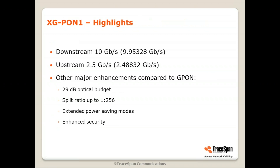Let's start with XG-PON 1. XG-PON 1 was the obvious main step after G-PON — based on similar principles. The downstream rate was 10G, or more accurately 9.95328G. The upstream was 2.5G, compared to 2.5G downstream and 1.25G upstream in G-PON. Other major enhancements include a 29 dB optical budget versus 28 dB in G-PON, a split ratio of 1 to 256 versus 128 in G-PON, power saving modes, and enhanced security — for example, optional upstream encryption and pre-shared key support.